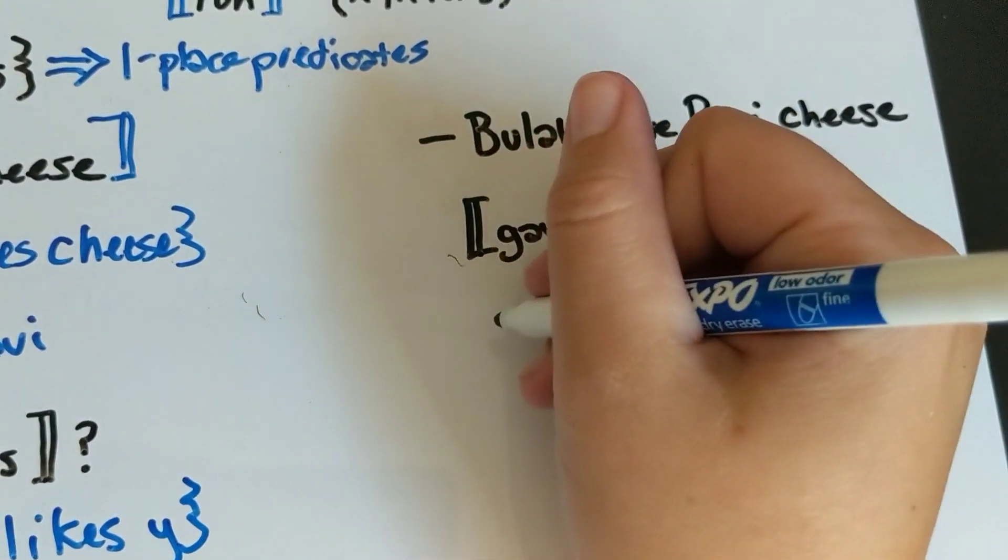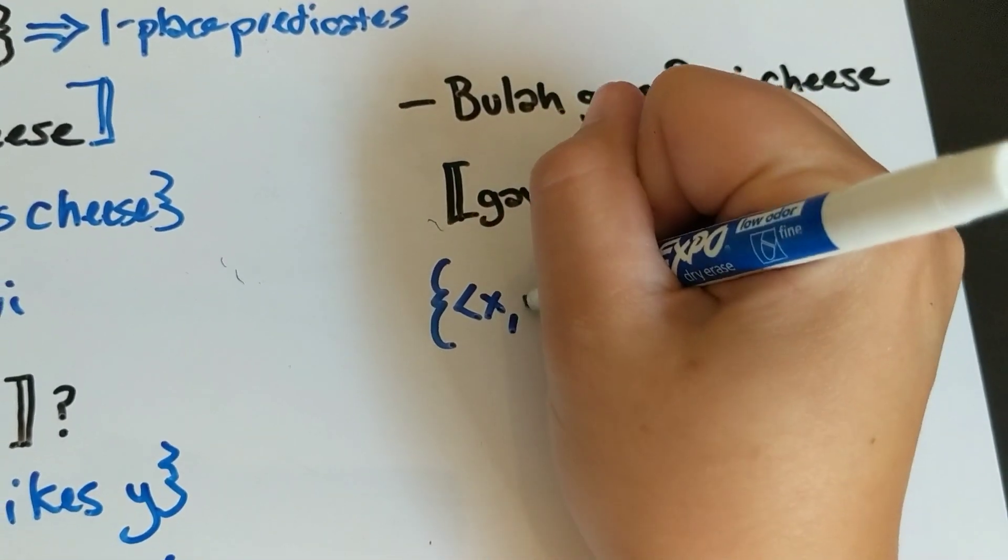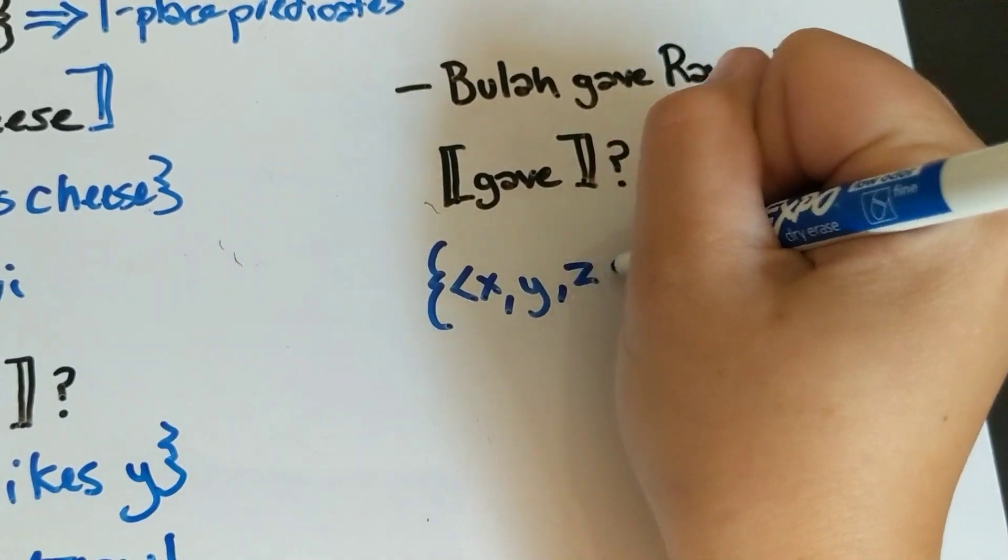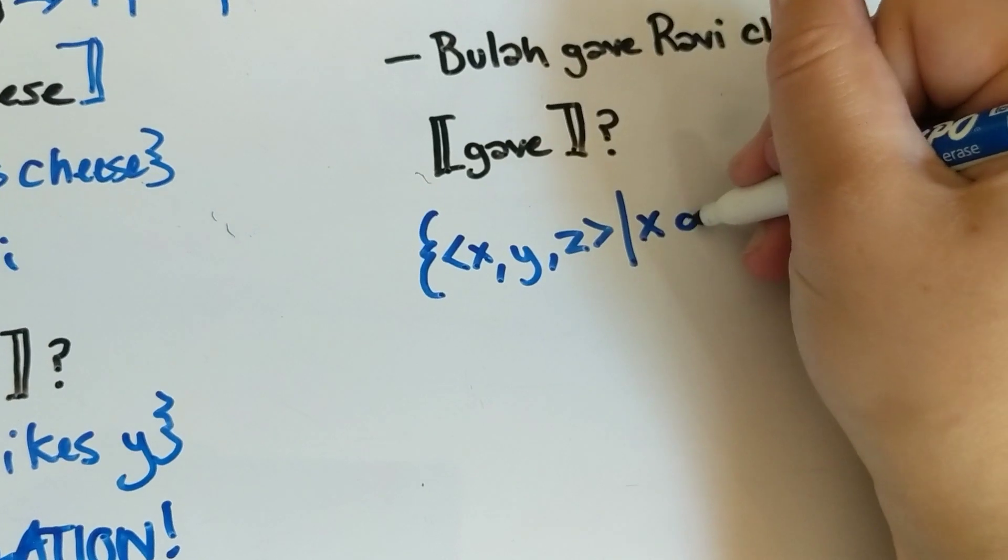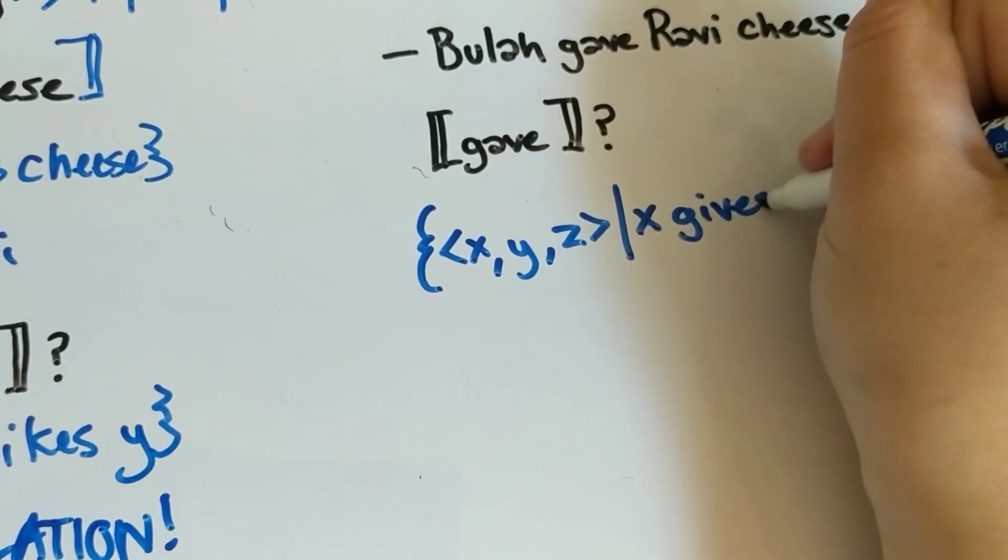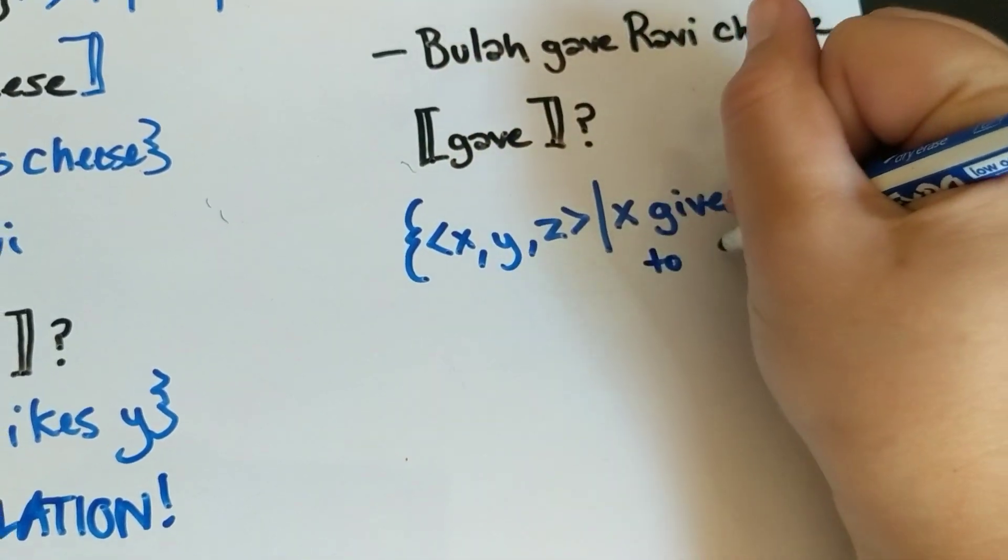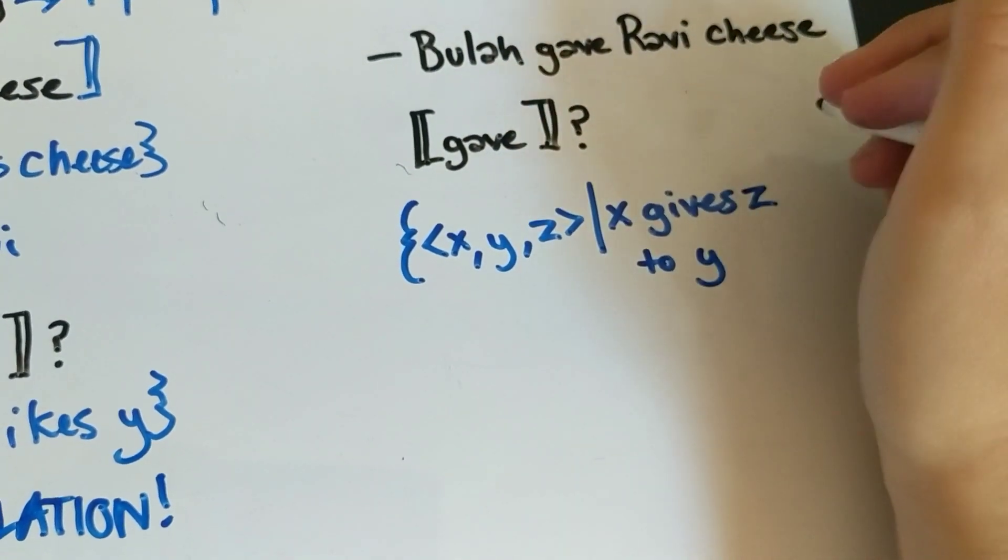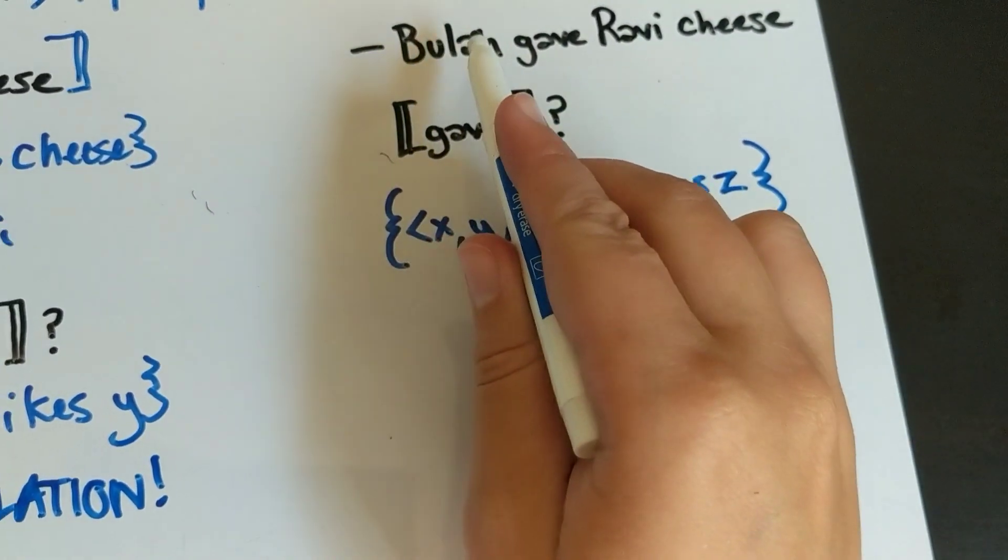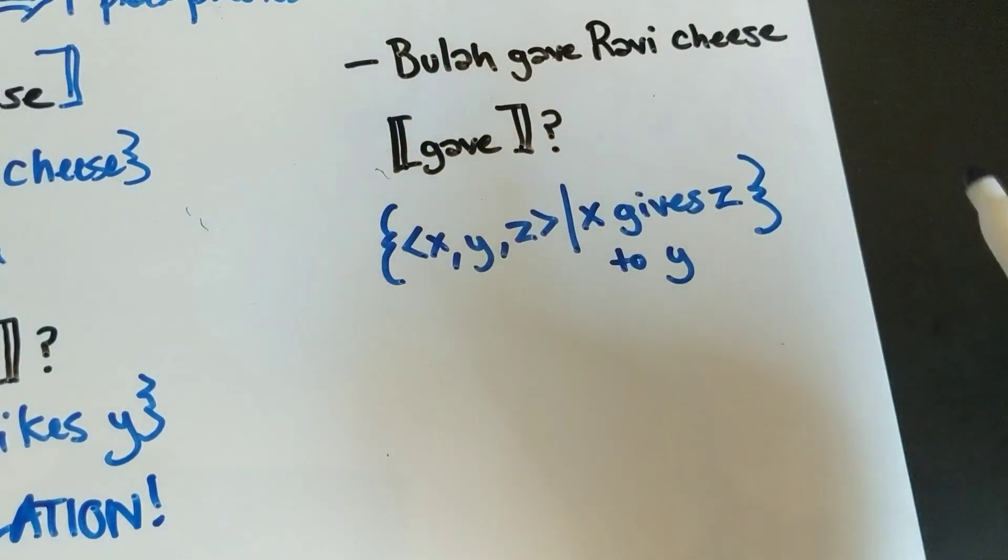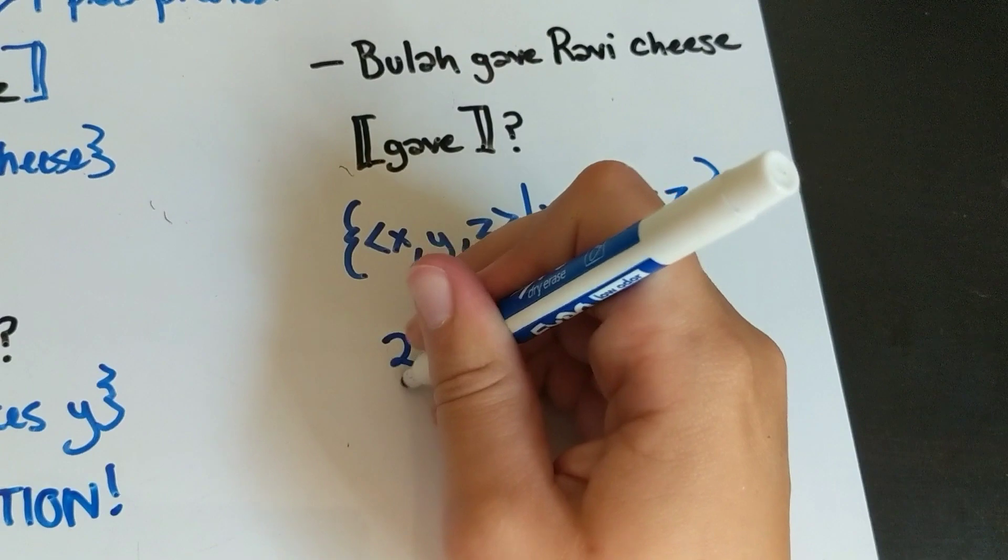So we can think of the word 'give' as a set of ordered triples such that x gives z to y. So Beulah gives cheese to Ravi. This introduces a three-place predicate.